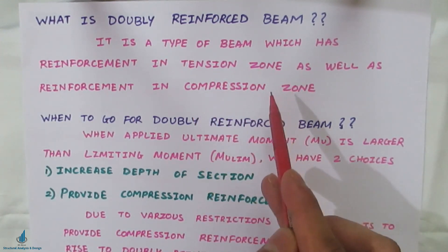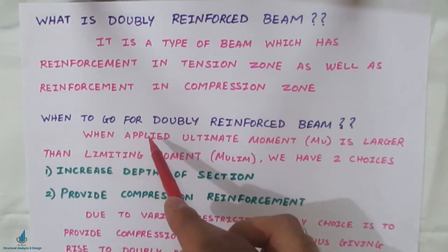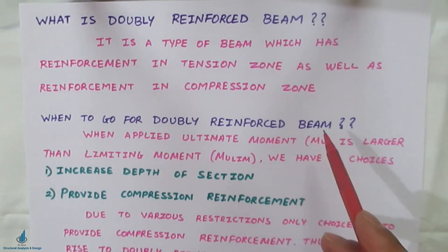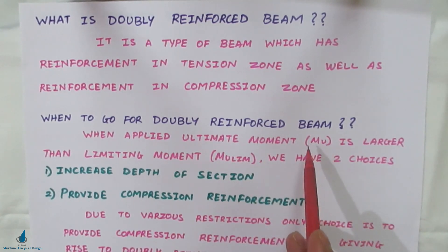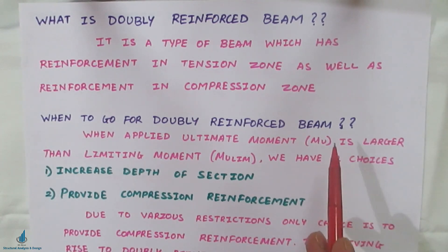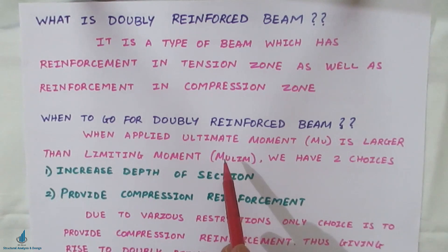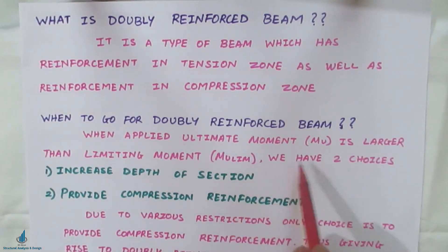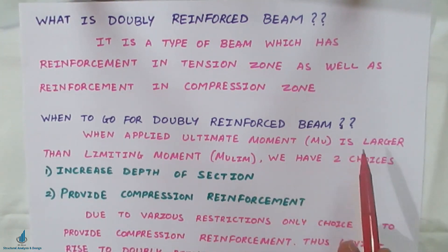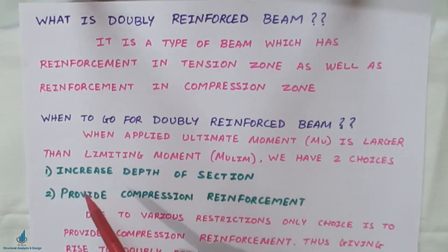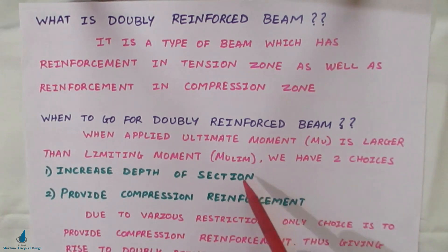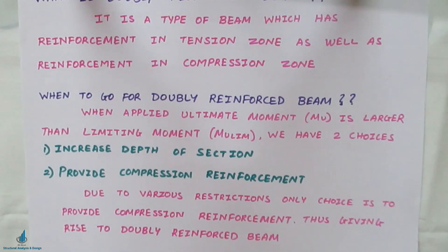Why do we provide reinforcement in the compression zone? When the applied ultimate moment (mu) is larger than the limiting moment (mu limit), there are two choices: either increase the depth of the section (D), or provide compression reinforcement. Due to various restrictions, the only viable choice is often to provide compression reinforcement, thus giving rise to a doubly reinforced beam.